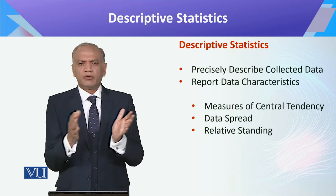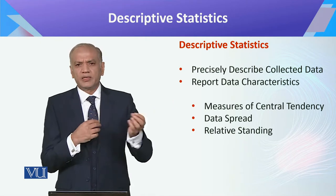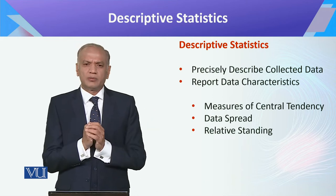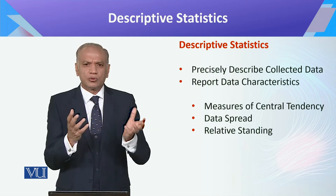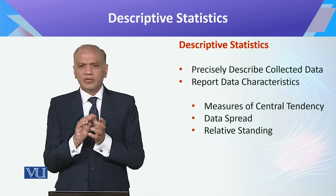For example, we are talking about a GCSE class and we say the average age is 16 years old. That is the way descriptive statistics works — describing factual information about a dataset.